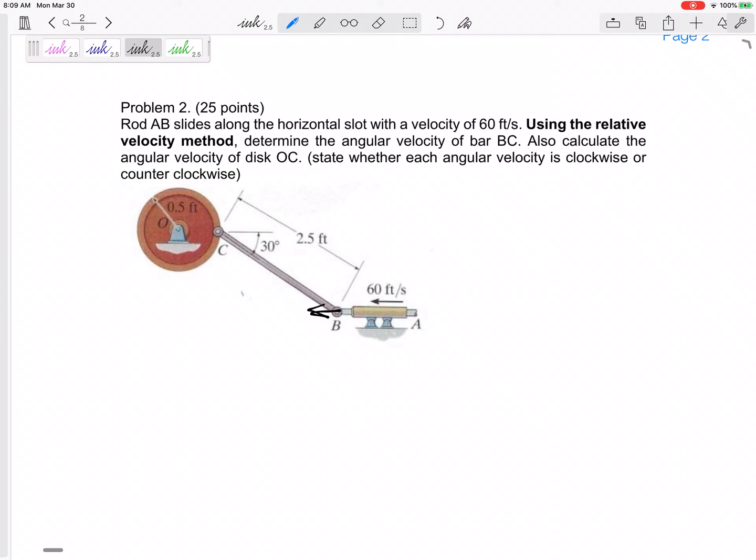All right, even if I didn't say use the relative velocity method, you would think, okay, bar BC, that's not in pure rotation. I can't just say V equals R omega to find the velocity of something like that. Bars that are not in pure rotation need to use some novel method like the relative velocity method. So the heart of this problem is bar BC, using the relative velocity method for bar BC.